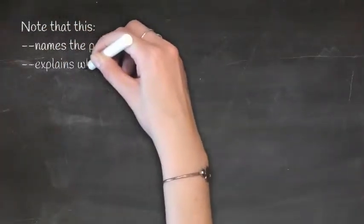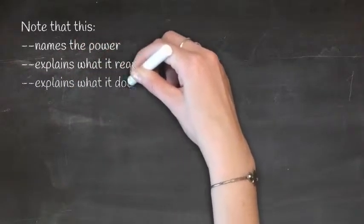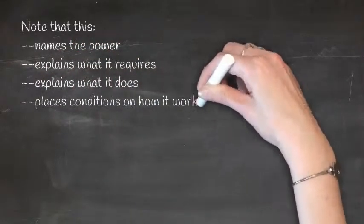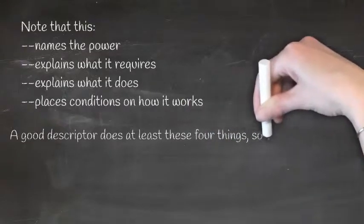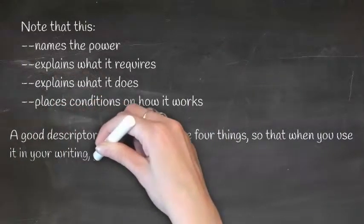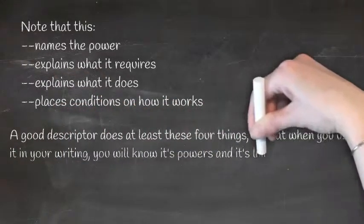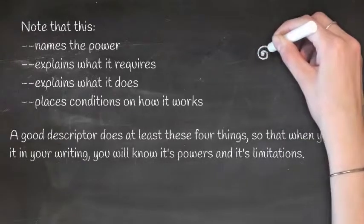Note that this names the power, explains what it requires, explains what it does, and places conditions on how it works. A good descriptor does at least these four things so that when you use it in your writing you will know its powers and its limitations.